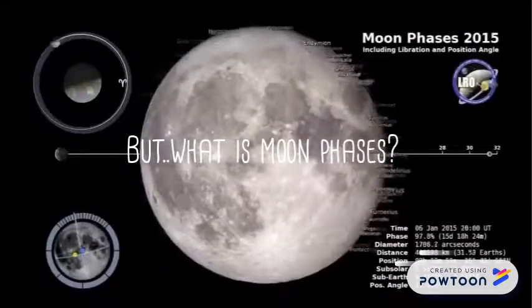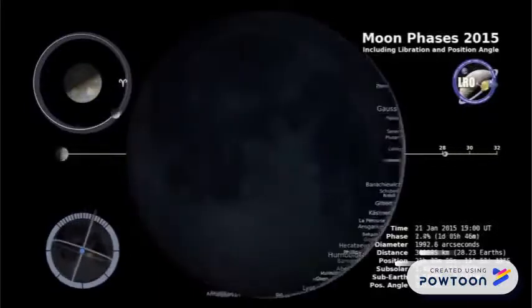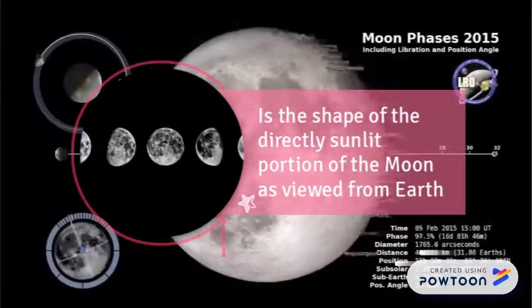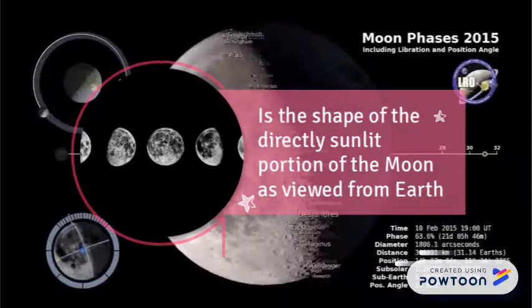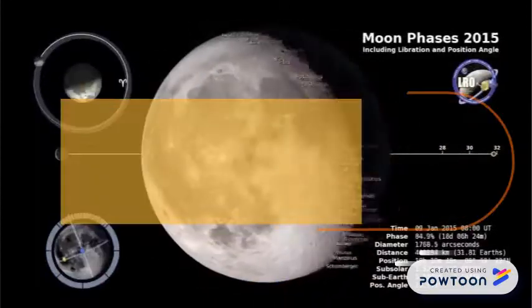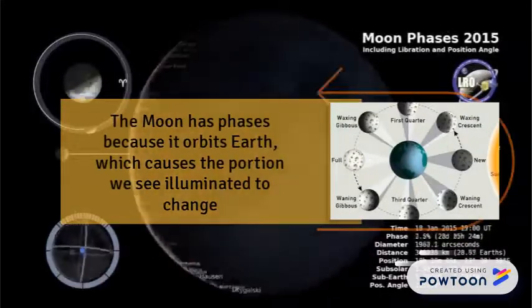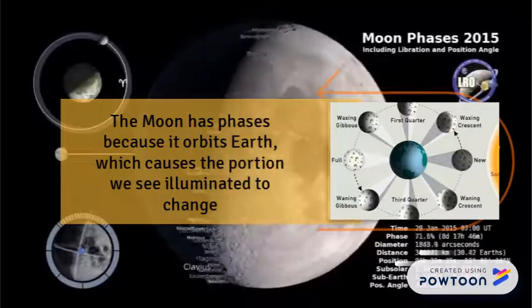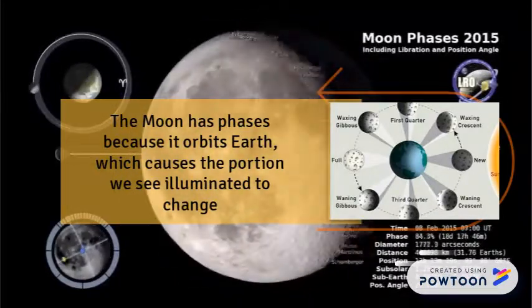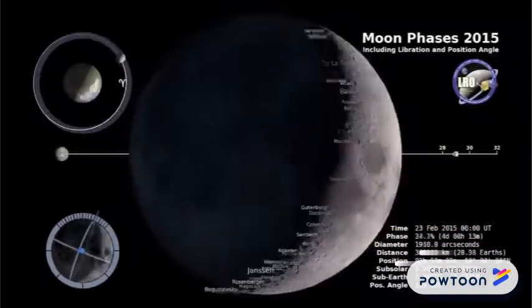But what are moon phases actually? Moon phases is the shape of the darkly sunlit portion of the moon as viewed from the earth. The moon has several phases because it orbits the earth, causing some portions to be seen by earth but some cannot in certain periods of time.